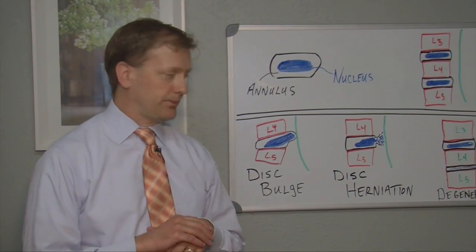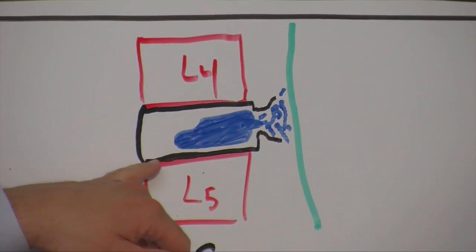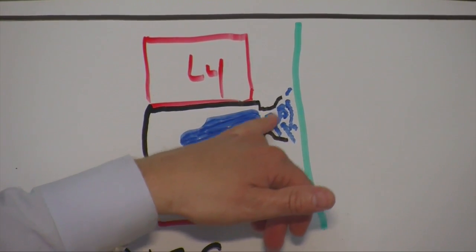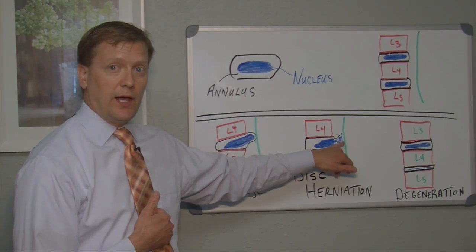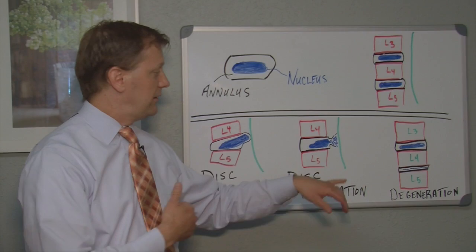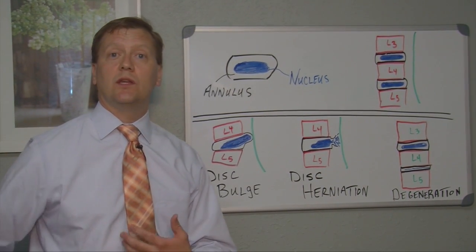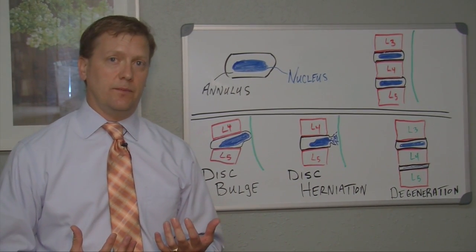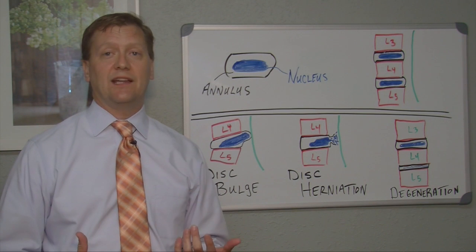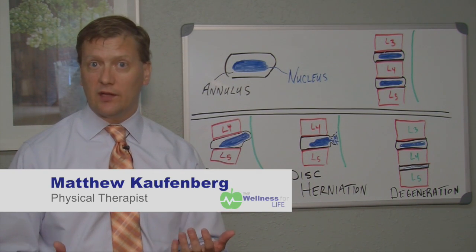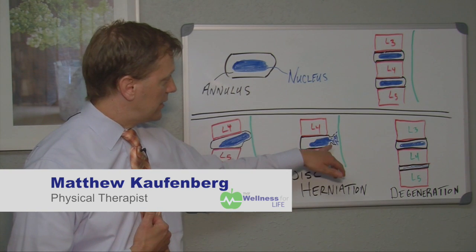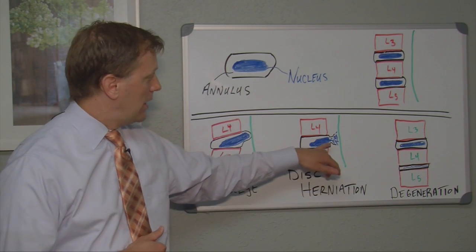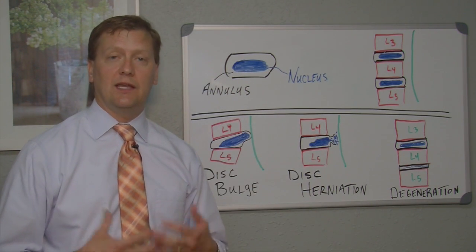The second thing is a disc herniation. A disc herniation is when the fluid actually gets outside of the annulus — the annulus actually tears, and then the fluid seeps outside. When that fluid seeps outside of the annulus, it can compress the nerve root and you can get a ton of leg pain as a result. A disc herniation usually will require some sort of anti-inflammatory — sometimes oral, other times you actually have to get an injection to get rid of that fluid on the outside. Then you would need to do some physical therapy to allow that annular tear to scar down and heal.